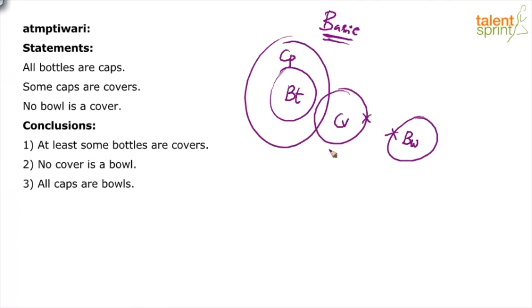When you say some caps are covers, try to draw covers in a way that it overlaps only with caps. Try avoiding overlapping with bottles. No bowl is a cover can be done this way. Of course, you can draw bowls on this side as well, but the basic diagram should have minimum overlapping. So try to keep it as disjoint as possible.